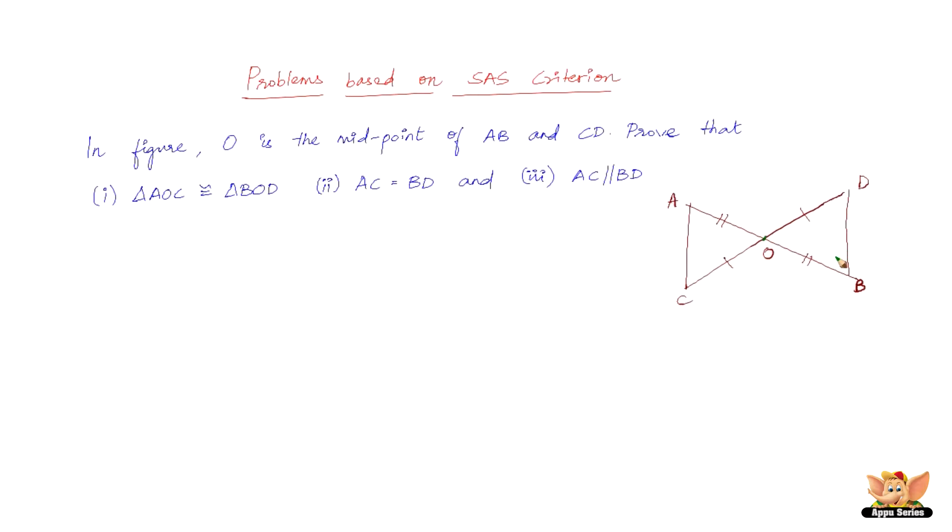These are the three things that we need to prove. Now in triangles AOC and BOD, we have AO equals OB, that is because O is the midpoint of AB, which is clearly mentioned.